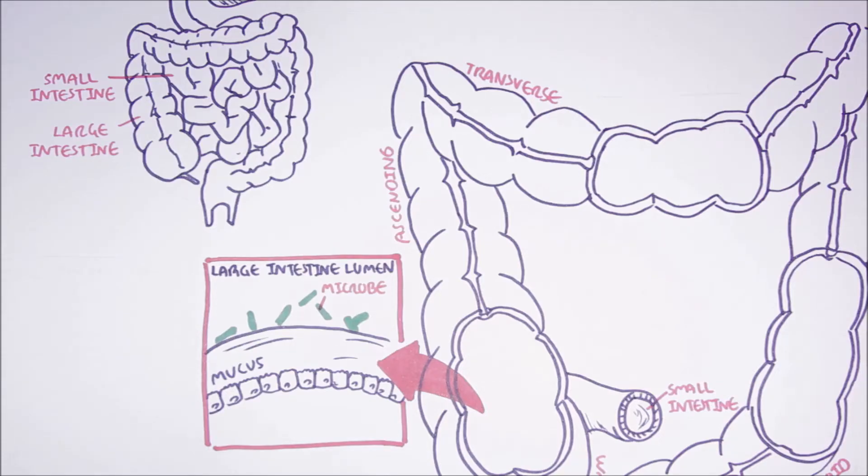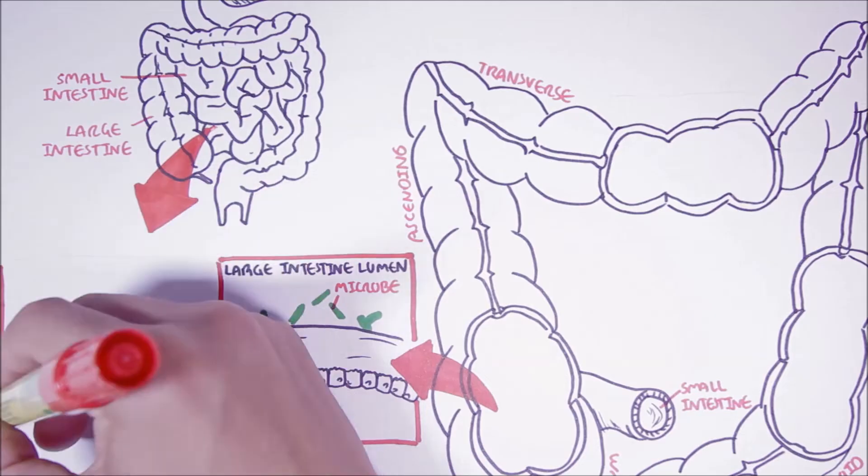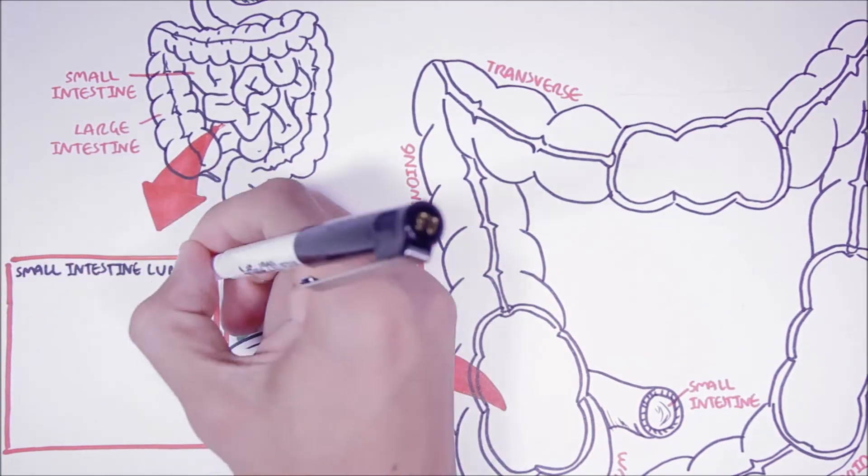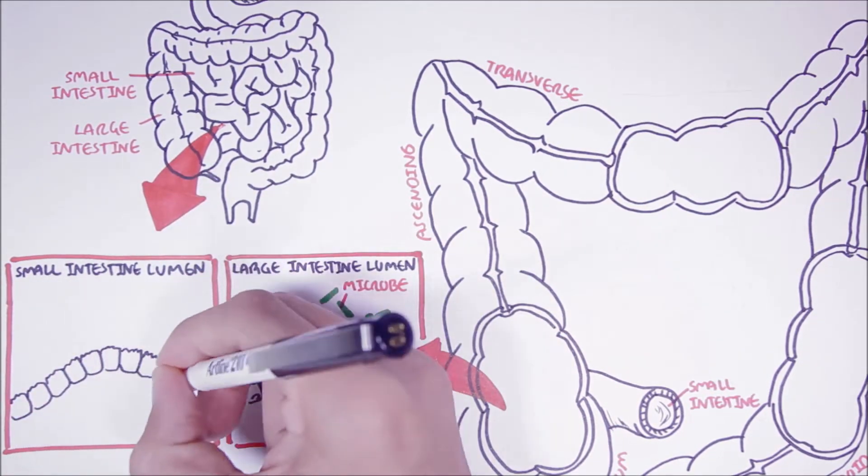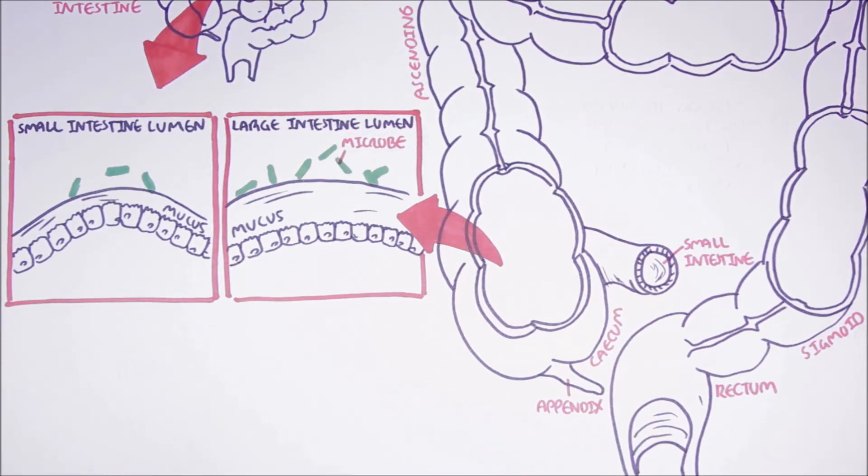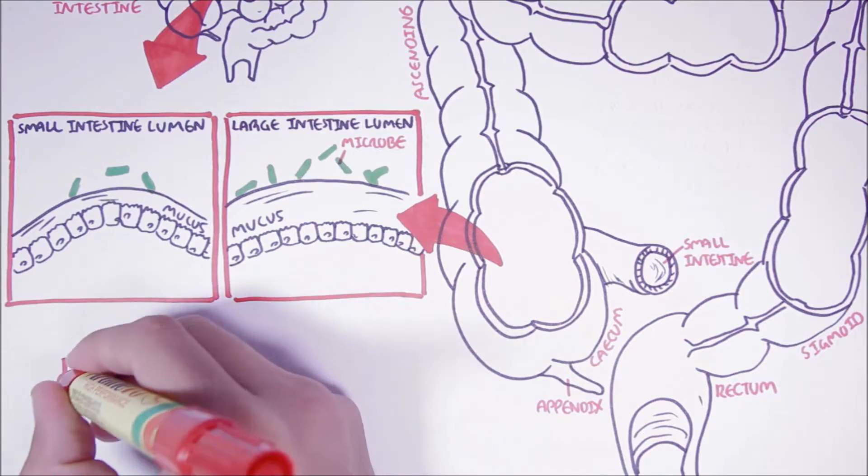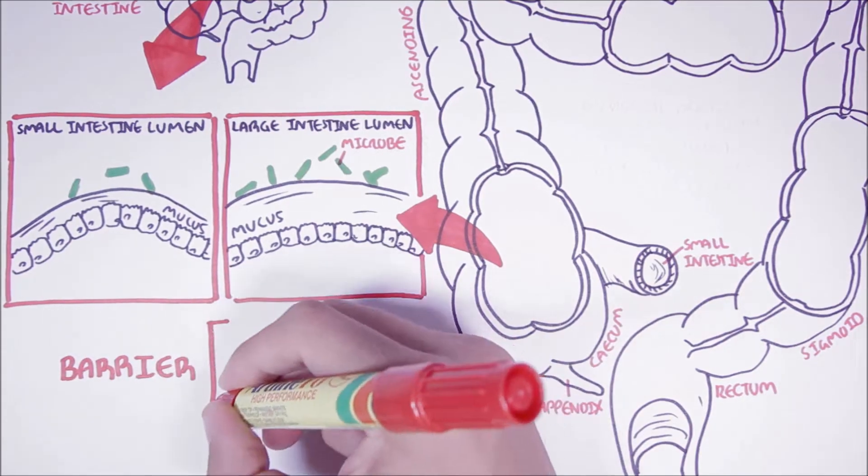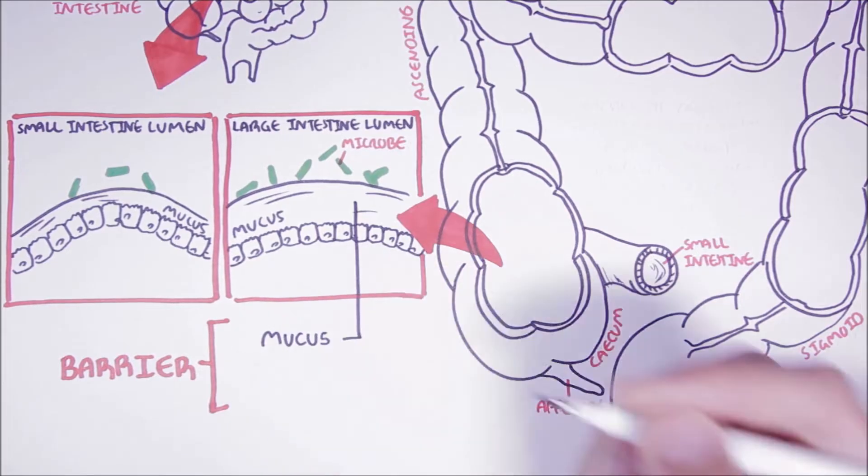Interestingly, if we compare this to the small intestine, the small intestine and the microbes are only separated by a thin layer of mucus, much thinner compared to the mucus layer of the large intestine. Therefore, we can see how that mucus helps keep these bacteria from causing any harm.